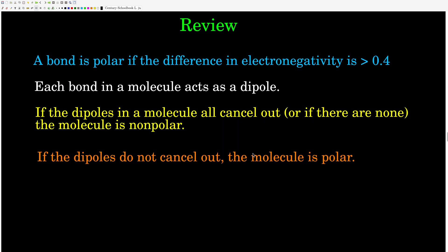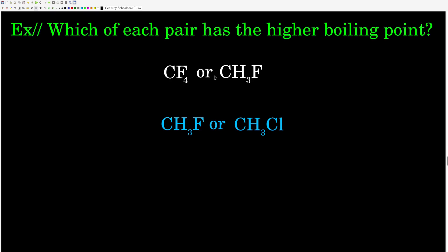A quick review: to tell if a molecule is polar, remember that a bond is polar if the difference in electronegativity is bigger than 0.4. In a molecule, each bond acts as a dipole — a separation of charge — and if all the dipoles cancel out or there are no polar bonds, the molecule is non-polar. If they don't cancel out, the molecule is polar. To figure this out, draw the Lewis structure, get the shape, and look at the differences in polarity. Which of these has a higher boiling point — carbon tetrafluoride or fluoromethane? Fluoromethane or chloromethane? Figure it out and come back.